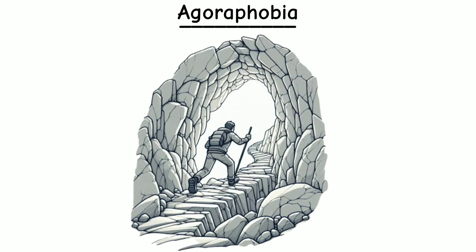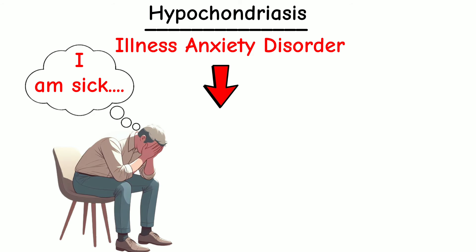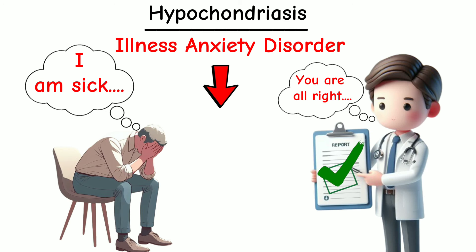Agoraphobia is a fear of being in situations where escape might be difficult or that help wouldn't be available if things go wrong. Hypochondriasis, also known as illness anxiety disorder, is a mental health condition characterized by excessive worry and fear about having a serious medical illness, despite medical reassurance and lack of evidence of illness.